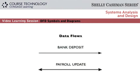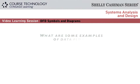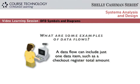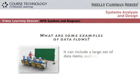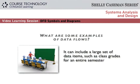A data flow allows data to move from one part of the system to another, like a cable in a communications network. Data flows can handle input, output data, or both. A data flow can include just one data item, such as a checkout registered total amount. Or, it can include a large set of data items, such as class grades for an entire semester.